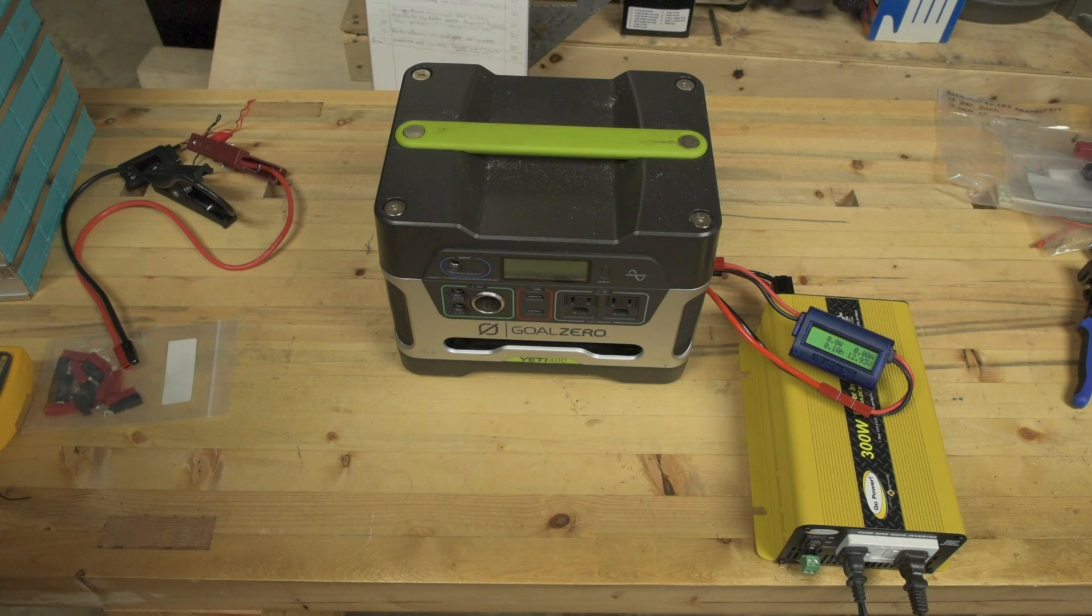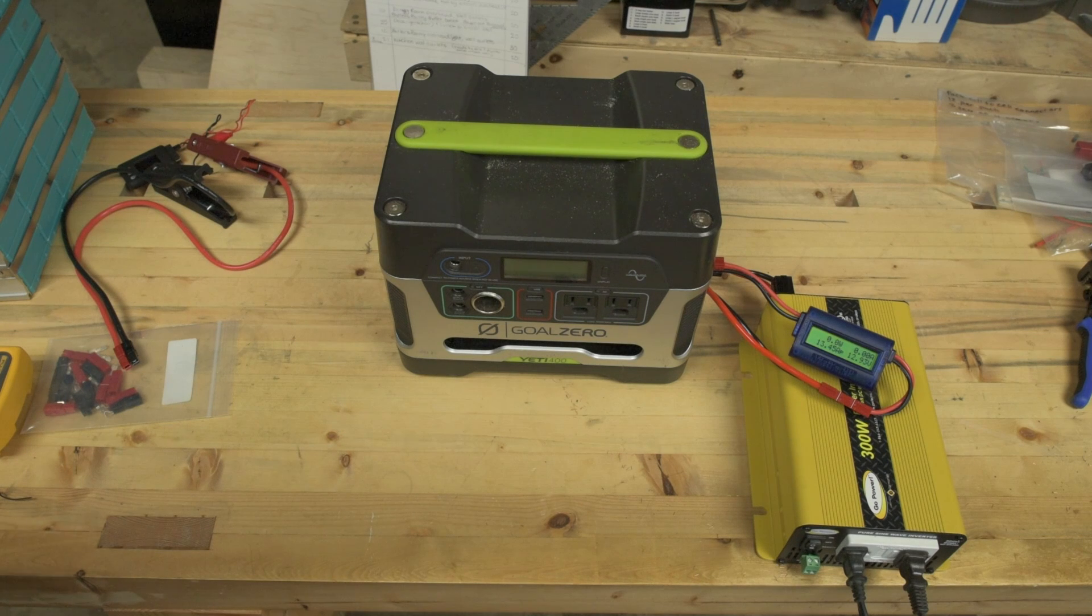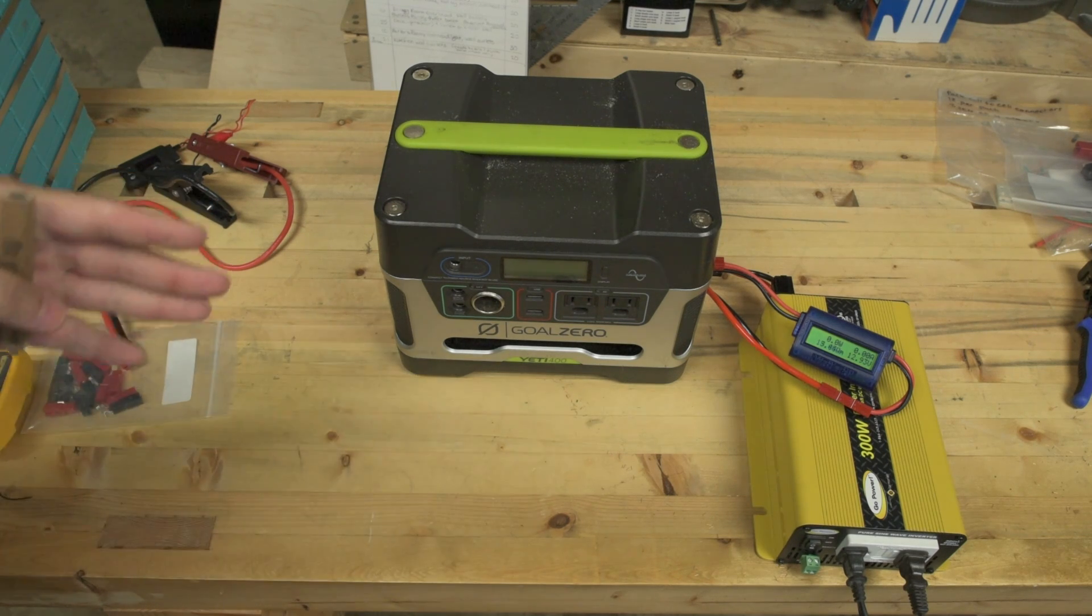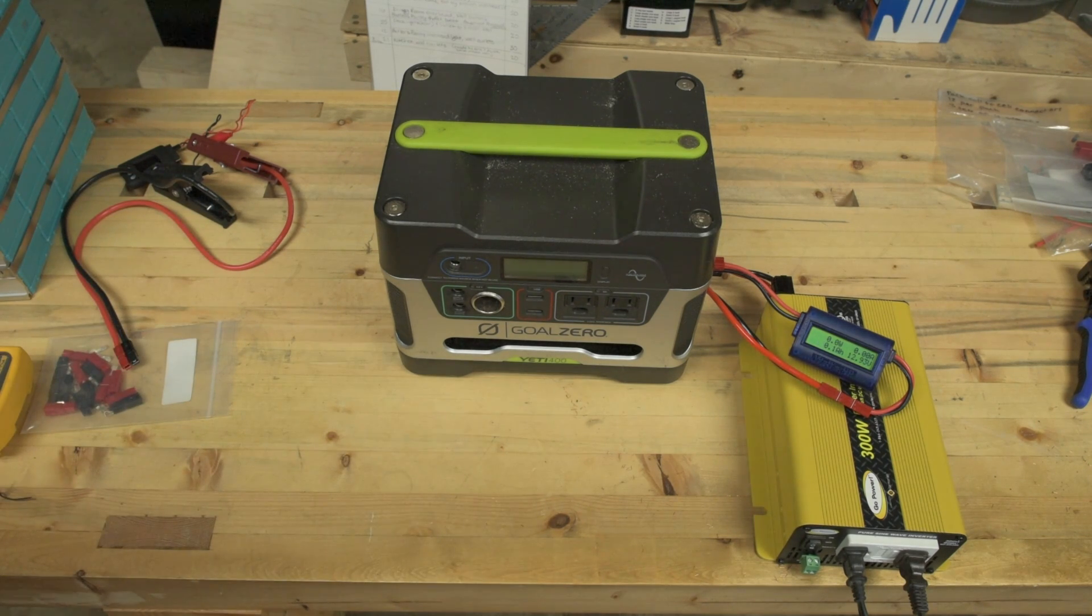I need the Yeti 400 battery to be about 50% discharged. I don't know how much power I'm actually going to be pulling out of the LiFePO4 cells, so I'll just drain it for about an hour with my two light bulbs.